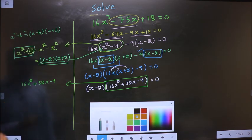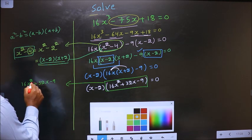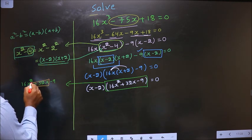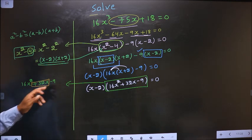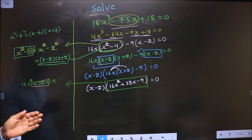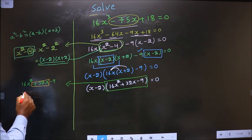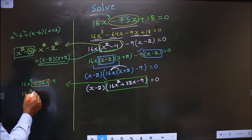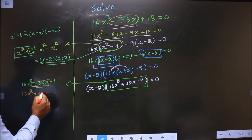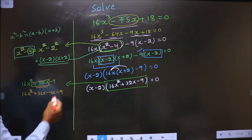I will factorize this quadratic: 16x squared plus 32x minus 9. To factorize it we need to change the middle term, that is plus 32x. 16 into 9 is 144, and 36 into 4 is 144, and 36 minus 4 is 32.